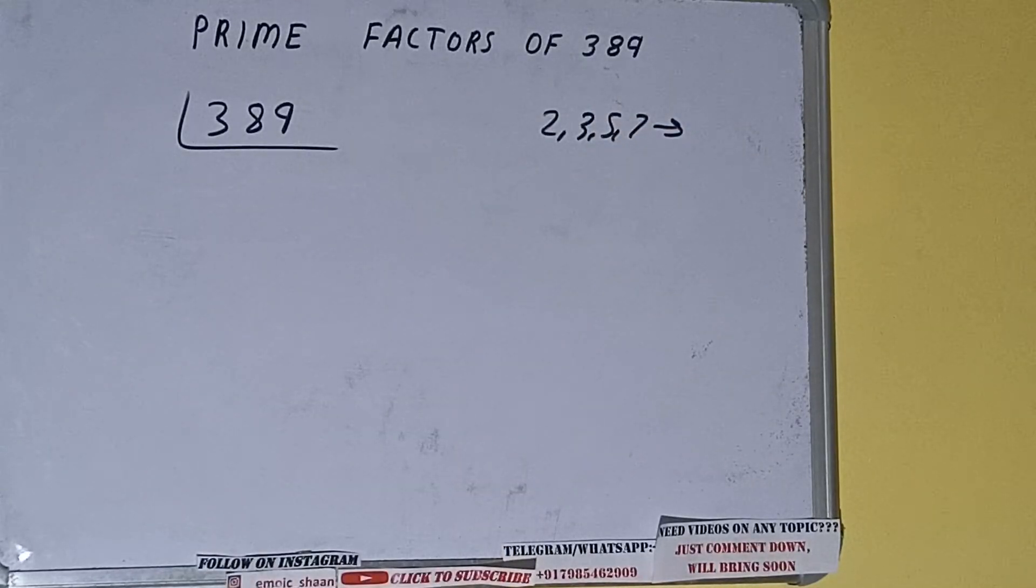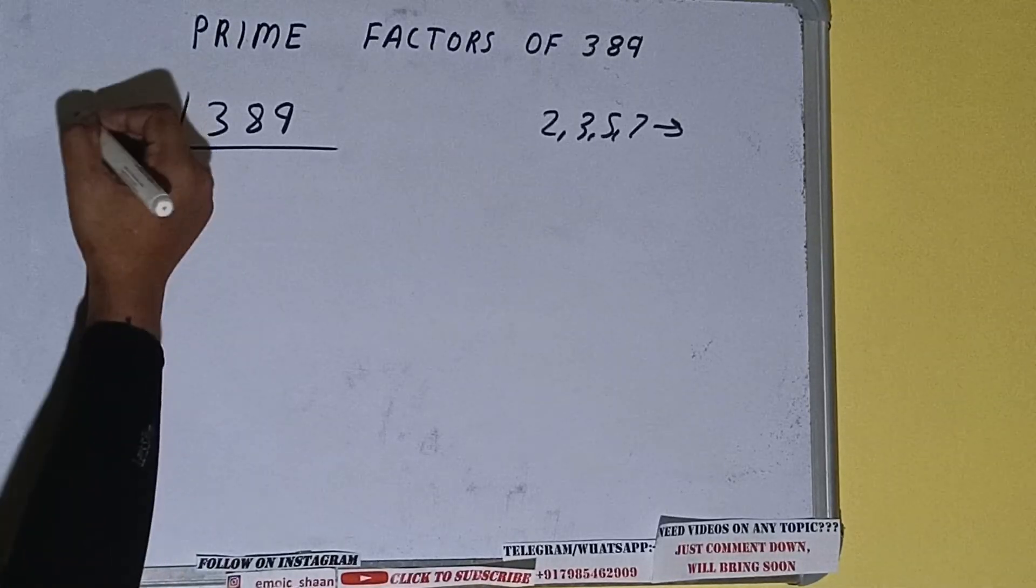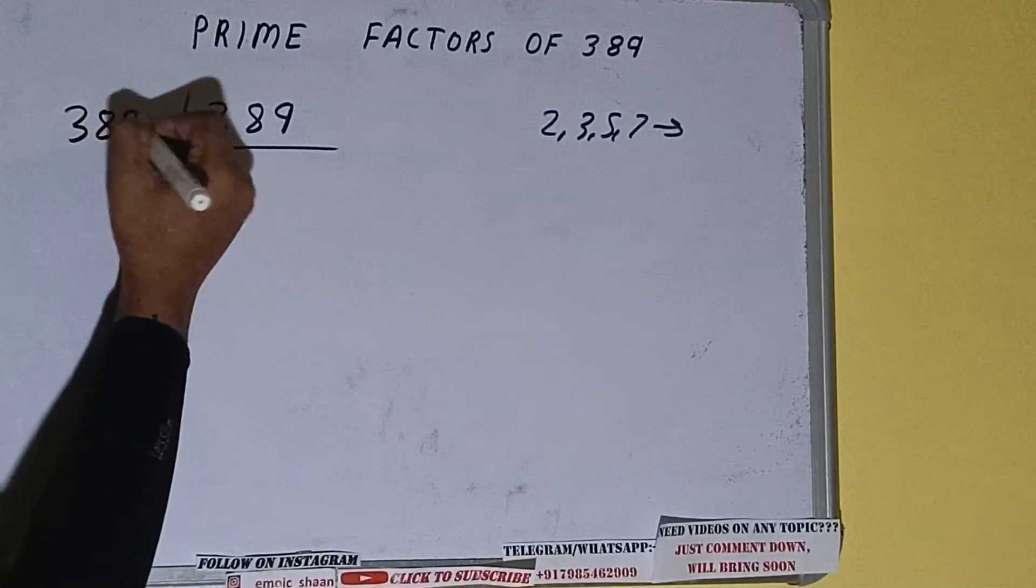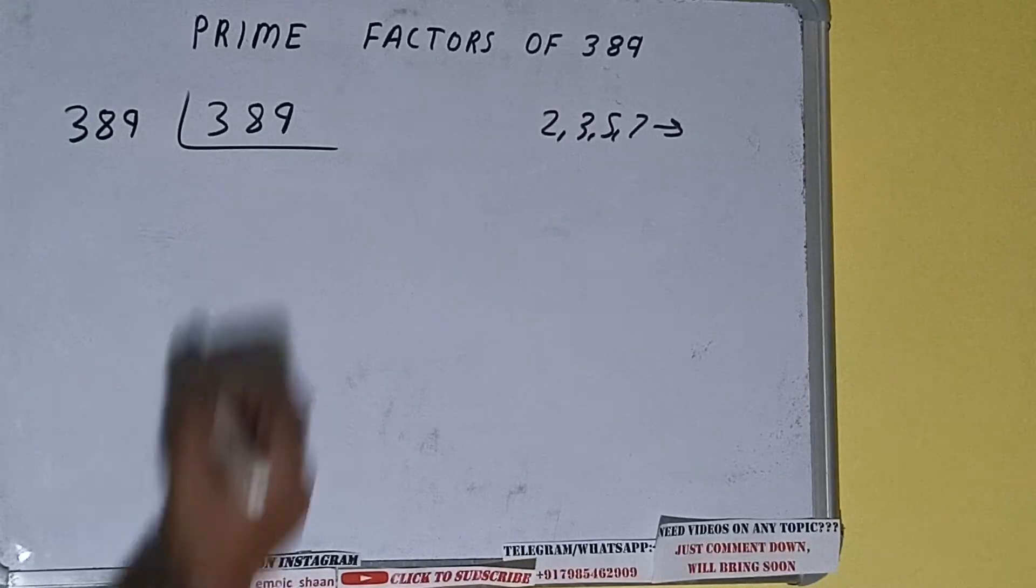So if we talk about the number 389, the number 389 is also a prime number. So it is only divisible by itself, that is 389, and once we do so we'll be getting 1.